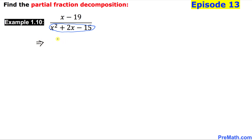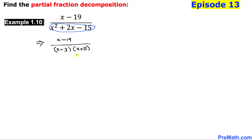So let's go ahead and take care of that. x minus 19 is still going to stay on the top, so the denominator can be factored out into x minus 3 and x plus 5 — two linear factors. So far so good.